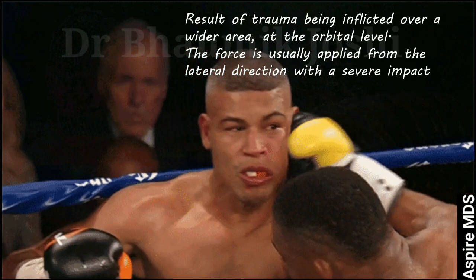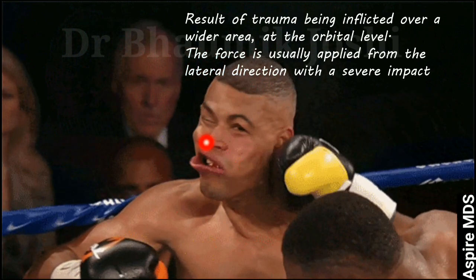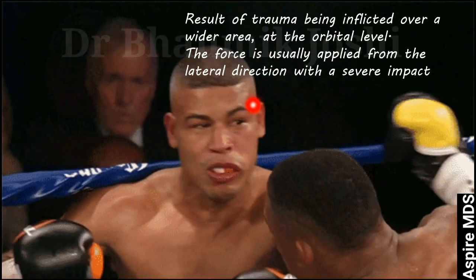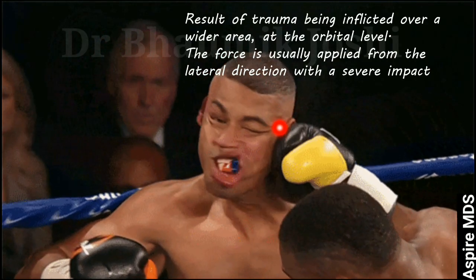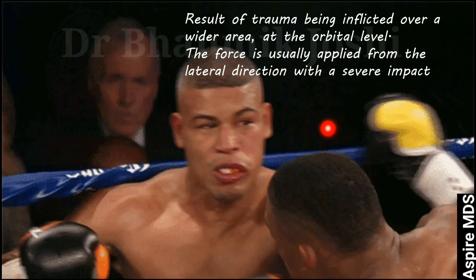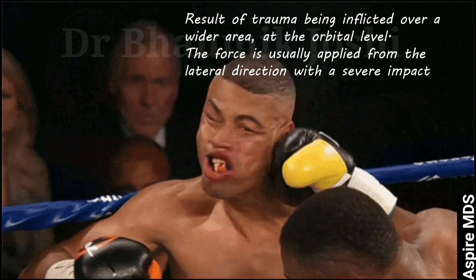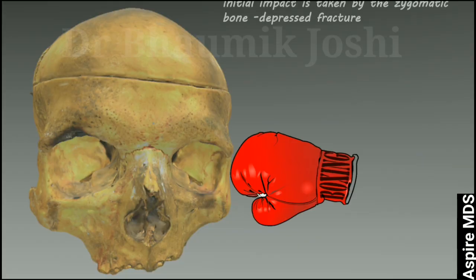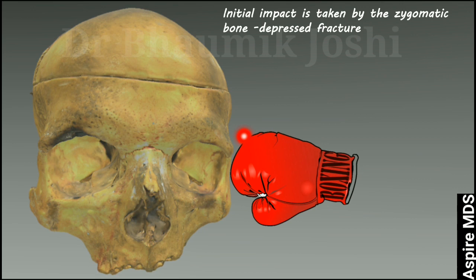This kind of fracture results from trauma inflicted over a wider area at the level of the orbit. The force is usually applied from a lateral direction with a severe impact. When the impact is taken by the zygomatic bone, as you can see where the trauma is taking place, this initial impact will cause a depressed fracture at the site of injury.